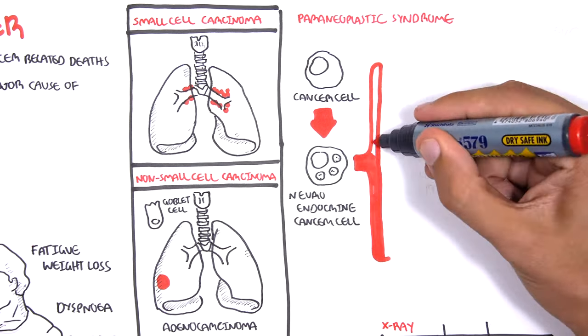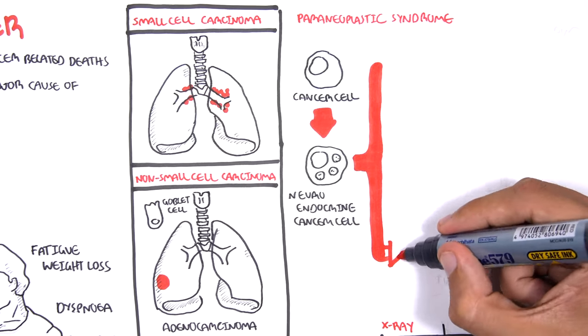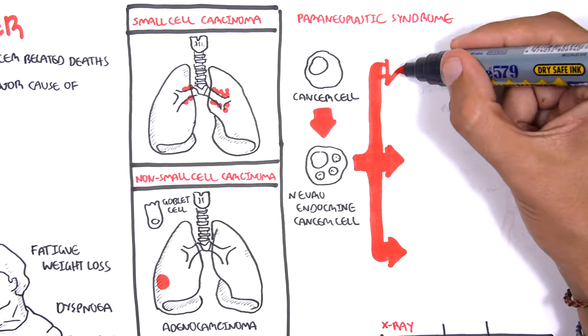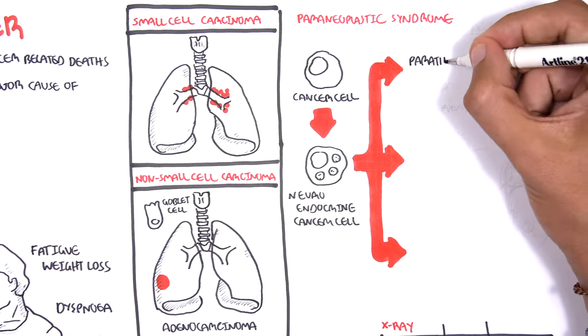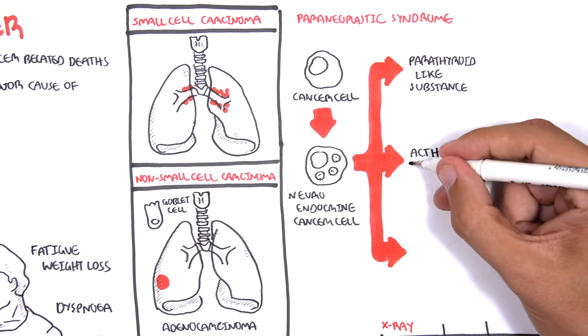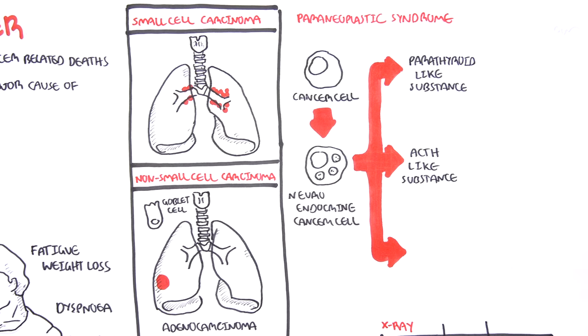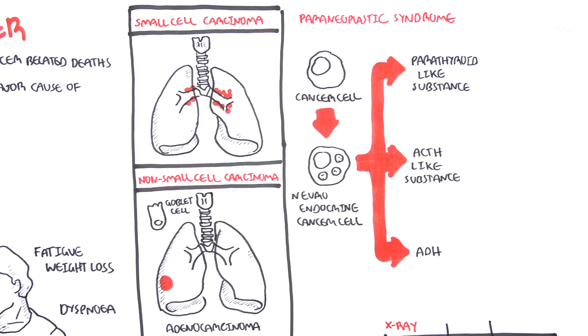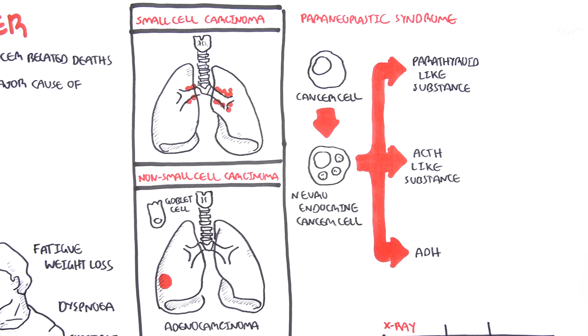Neuroendocrine cancer cells can release hormone-like substances. The main ones which I'll talk about are parathyroid hormone-like substance, ACTH-like substance, and antidiuretic hormone. Essentially neuroendocrine cancer cells mimic other hormones that are produced normally by our body.